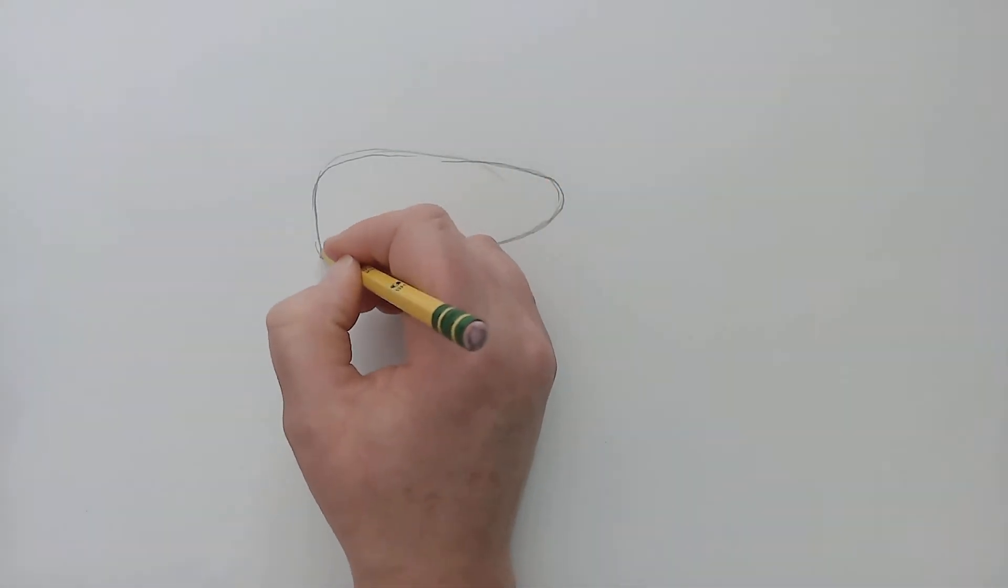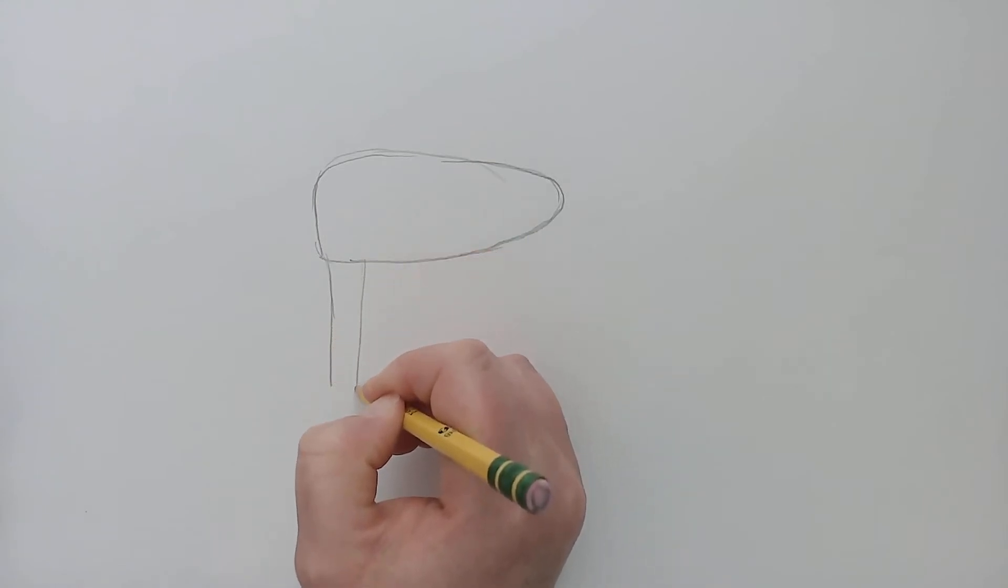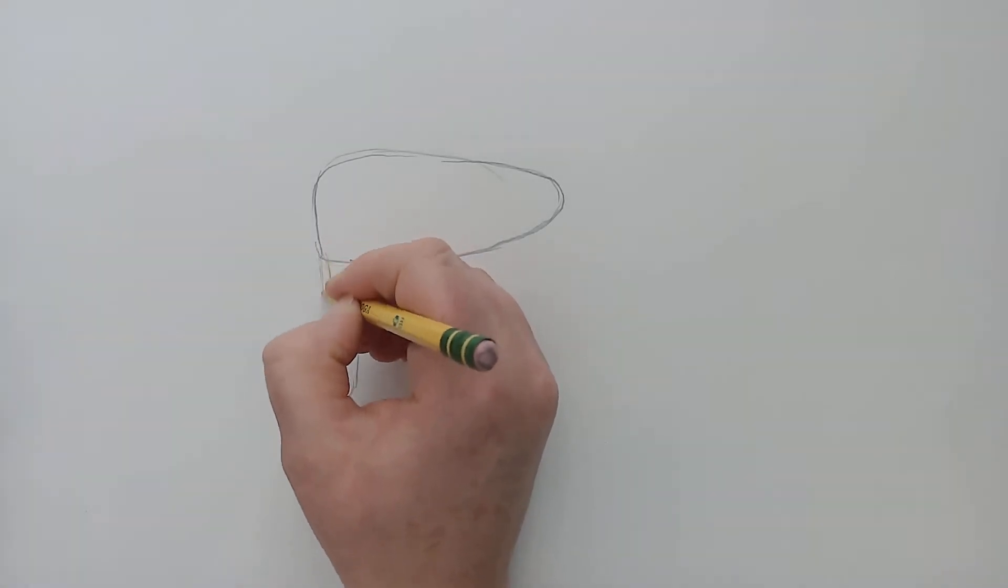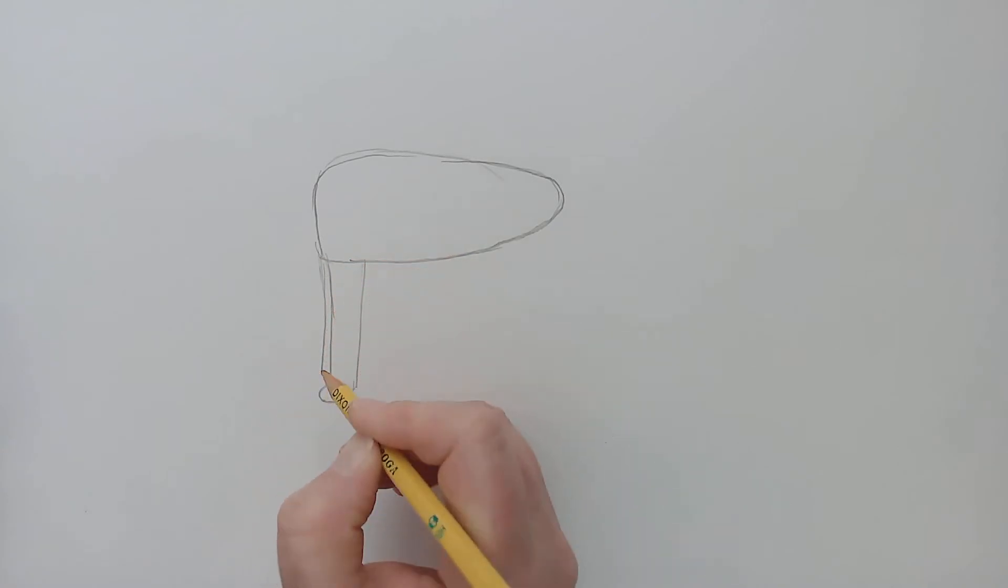Then we're going to add a long line down for that front leg here standing and the foot kind of comes out like this and we'll just add a little bit of an oval shape here. For the other leg, you can't really see it because it's kind of behind that leg. So we're just going to add another line down, drop it next to it.